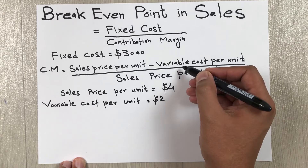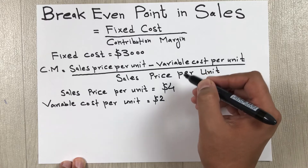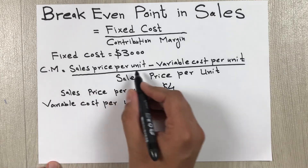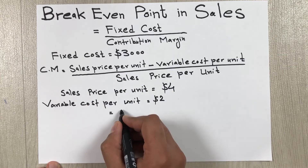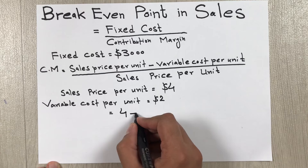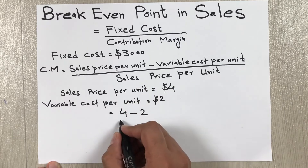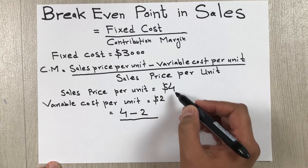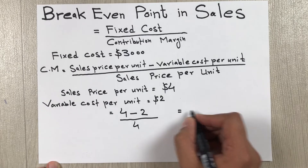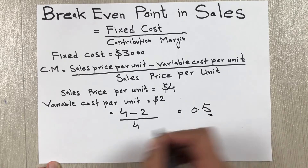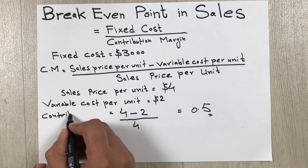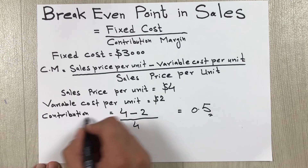Now we have both values and we'll put them into the contribution margin formula. Sales price per unit is $4, minus variable cost per unit which is $2, divided by sales price per unit which is $4. When we do this calculation our answer is 0.5. So 0.5 is our contribution margin.